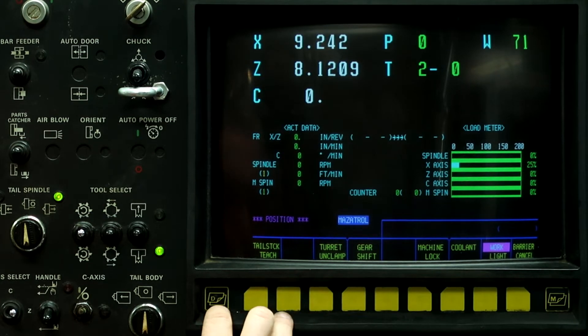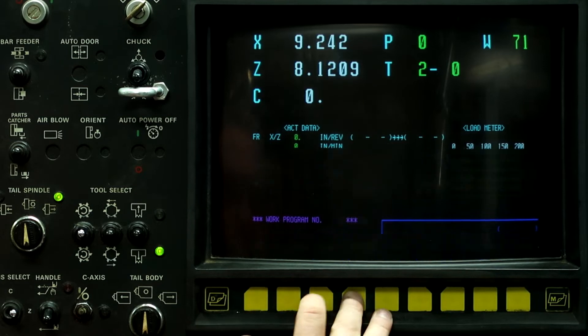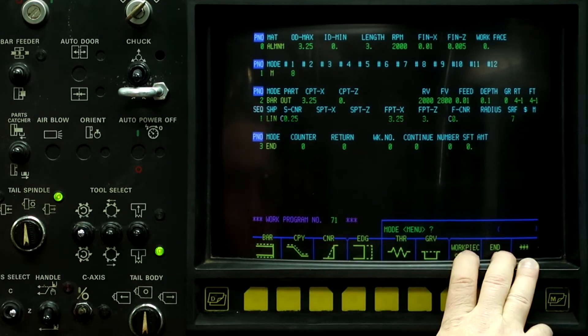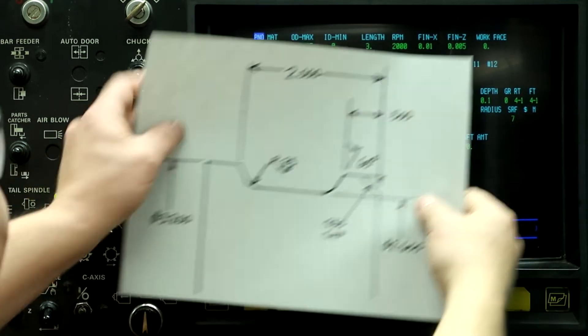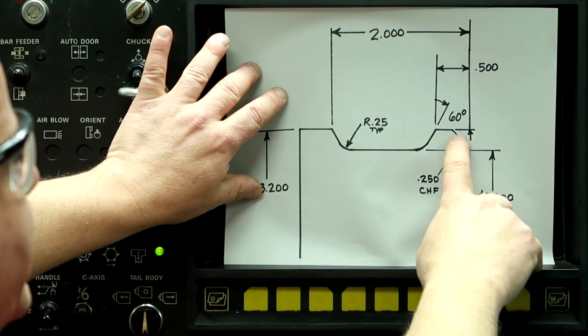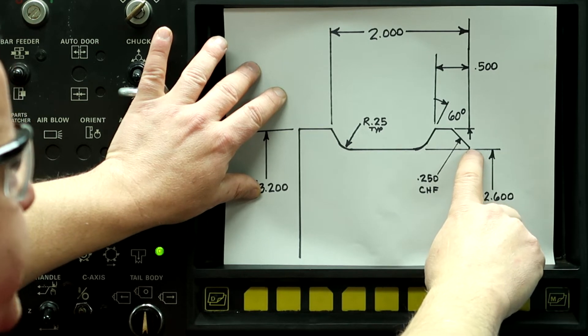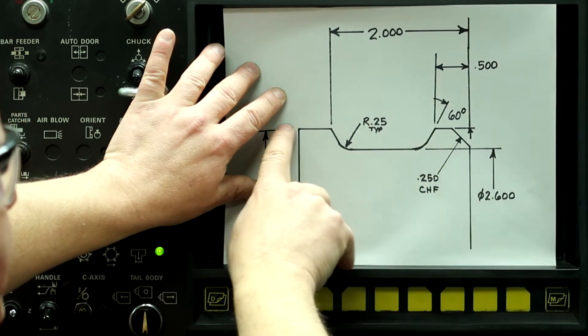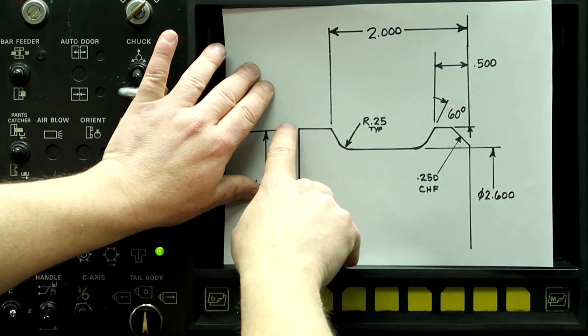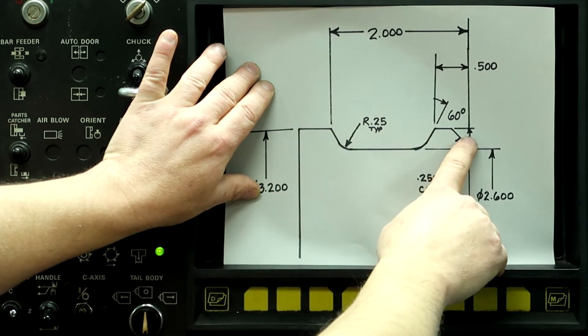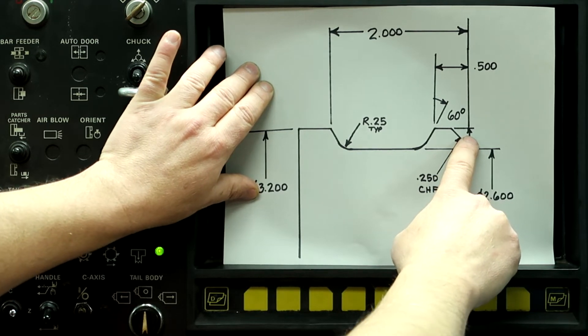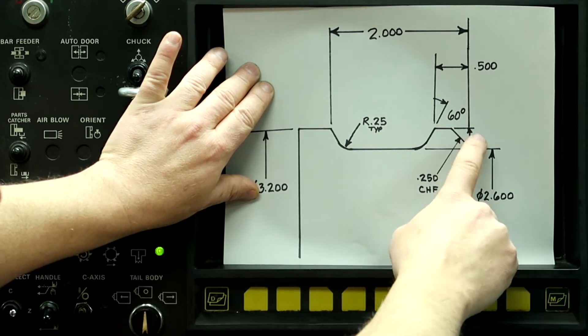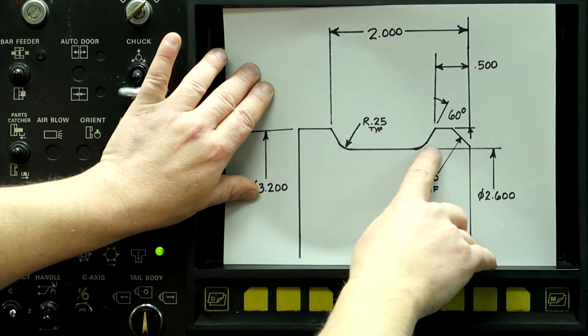So what we're going to do is go to the program that we already have started here. What I want to do is put this 0.250 chamfer and machine the OD of this part three inches long with tool four, which is a CNMG 432. And then I want to show you the reason for the highlighted bar out.